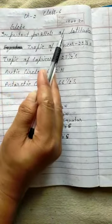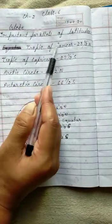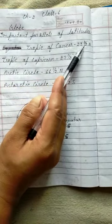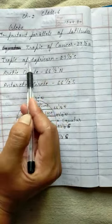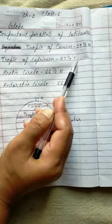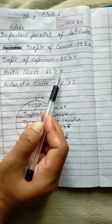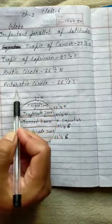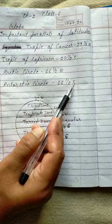Important parallels of latitude. फर्स्ट है अपना Tropic of Cancer, 23 1.2 degree north in north hemisphere. Tropic of Capricorn, 23 1.2 degree south means in south hemisphere. Arctic circle, 66 1.2 degree north in north hemisphere. Antarctic circle, 66 1.2 degree north in south hemisphere.